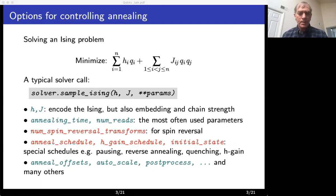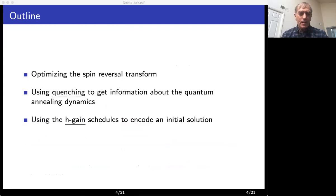Specifically, we are discussing the spin reversal transform and the schedule parameters. In this talk, I will cover three different uses. First, I'll talk about spin reversal, how we can optimize it. Next, I will discuss how we use quenching to obtain information about the quantum annealing process. Finally, I will talk about the h-gain feature and how we used it to provide initial solution to D-Wave.